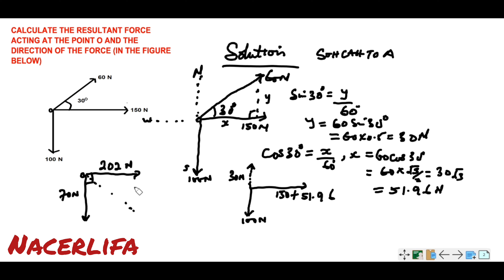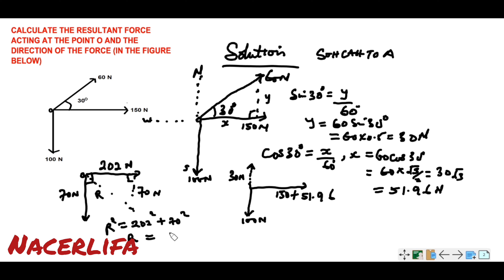We can use Pythagoras' rule to find the resultant force. R equals the square root of 202 squared plus 70 squared. If we compute this, we have approximately 213.8 Newton. So this is the resultant force acting at this point.